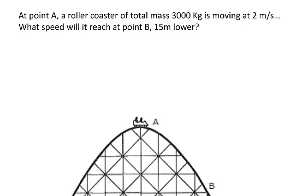At point A, a roller coaster of total mass 3000 kilograms is moving at a speed of 2 metres per second. What speed will it reach at point B, which is 15 metres lower?